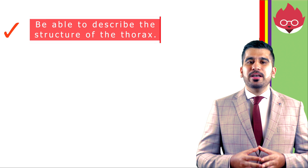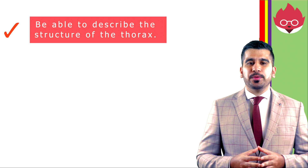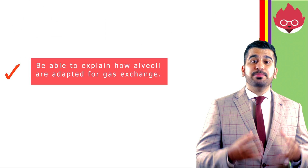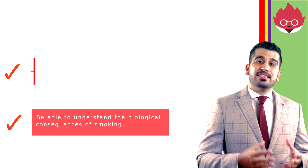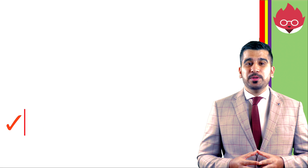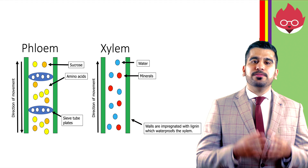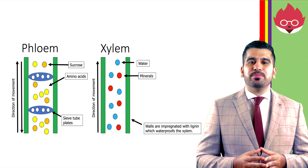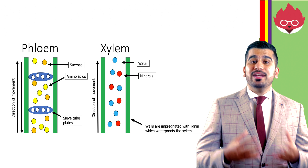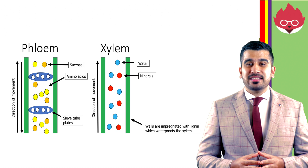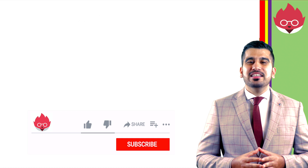At the end of the lesson, you should be able to describe the structure of the thorax, be able to explain how the alveoli are adapted for gas exchange, and be able to understand the biological consequences of smoking. In our next lesson, we will look at the phloem and the xylem in the transport of nutrients in plants, as well as understanding transpiration and the factors that affect it.